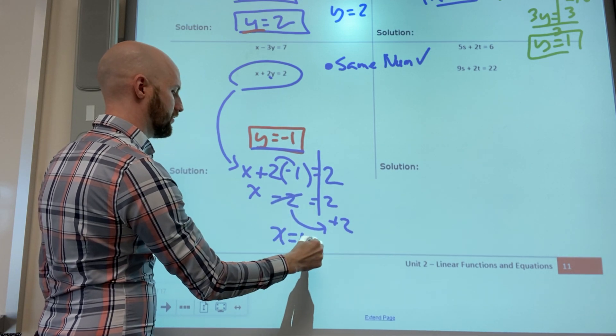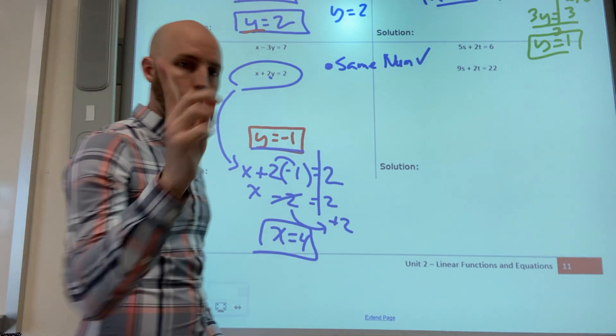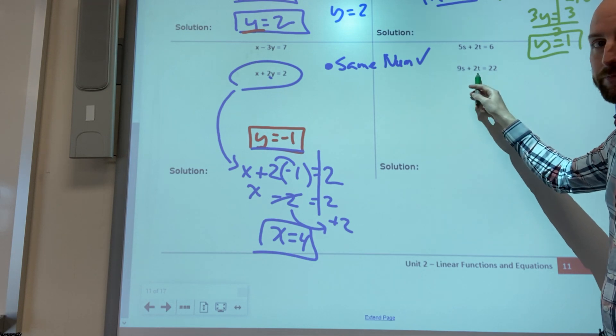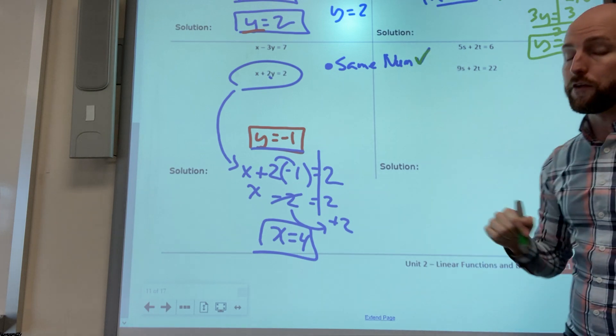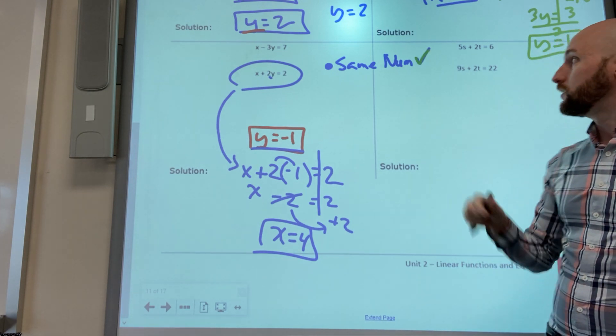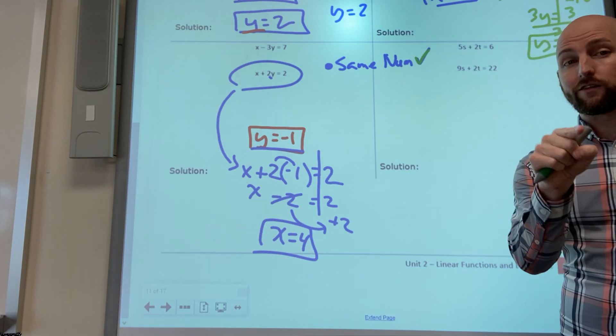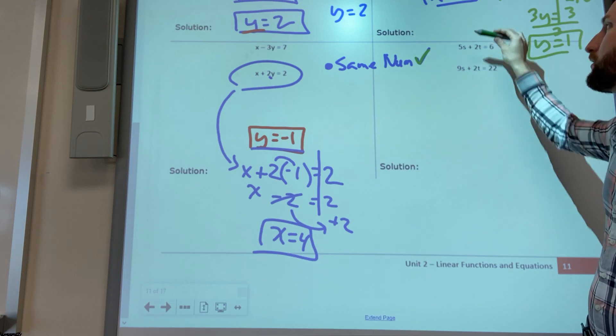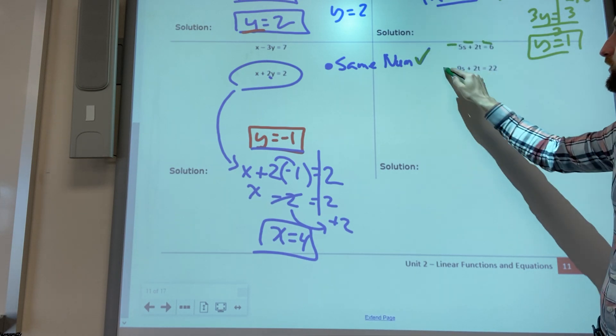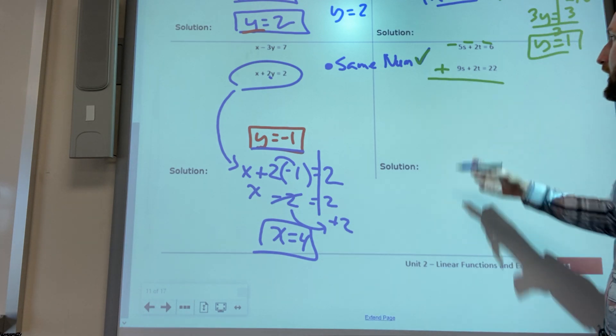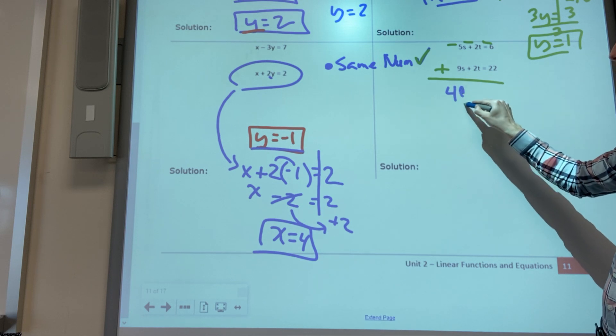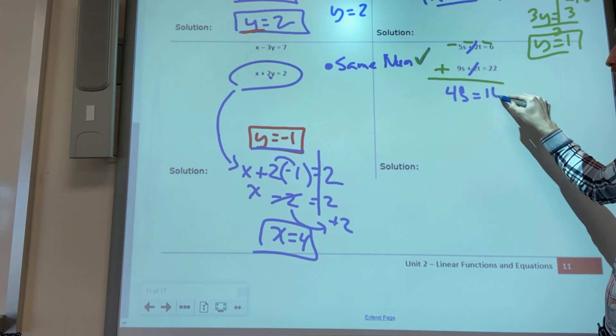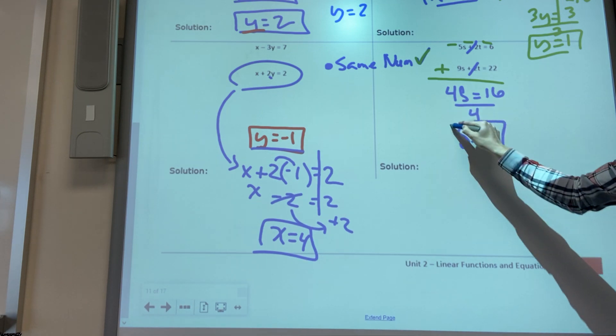One more example. Somebody the same number one of the letters? Yes, the t. Son mismo numero? They're the same number on the t. Do they have opposite signs? Positive positive, no. So this is your decision what do you want to change. I'm going to combine negative five plus nine is four s, negative two plus two is cancel, negative six plus 22 is 16, divide by four, s is four.